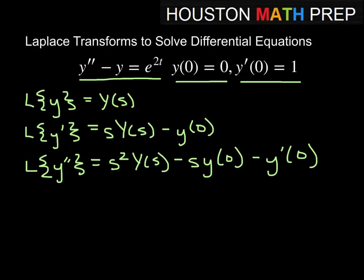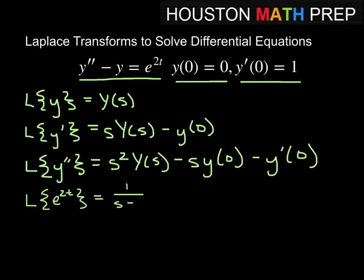Now we need to look at the right-hand side, e to the 2t, so we calculate the Laplace transform of e to the 2t. At this point we either assume you are starting to memorize Laplace transforms or that you have a table in front of you. The Laplace transform of e to the 2t is 1 over s minus 2.